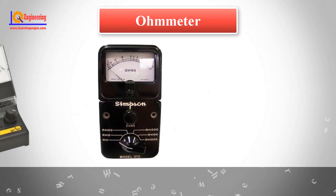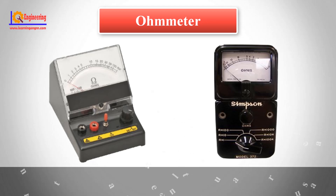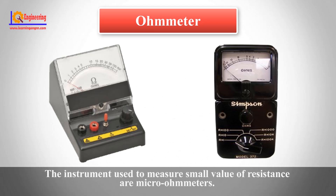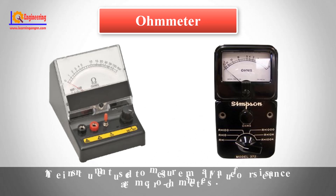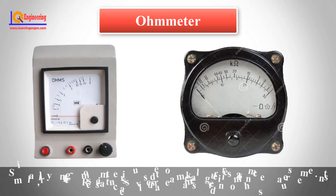Ohmmeter: An electrical instrument that measures electrical resistance is known as an ohmmeter. Instruments used to measure small values of resistance are micro-ohmmeters. Similarly, a megohmmeter is used to make large resistance measurements. Resistance values are measured in ohms.